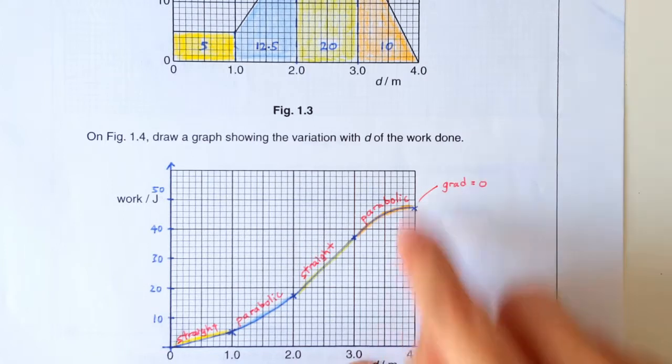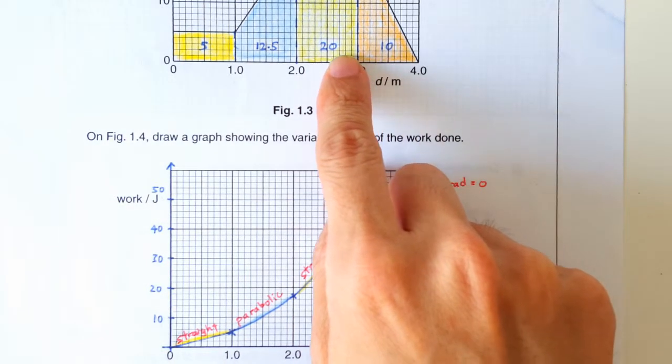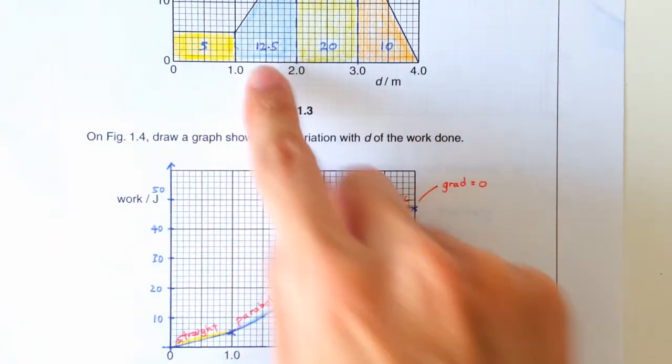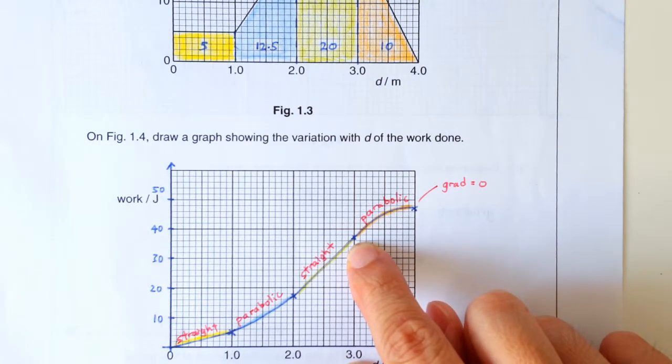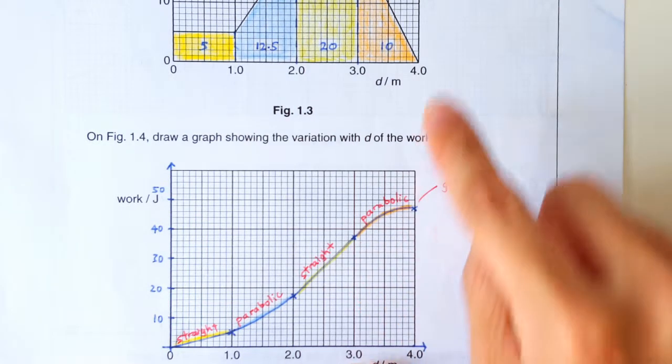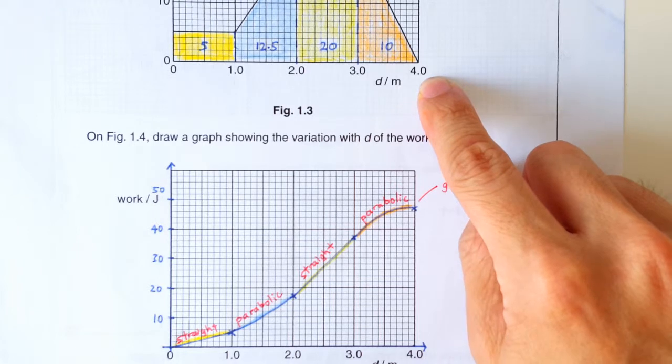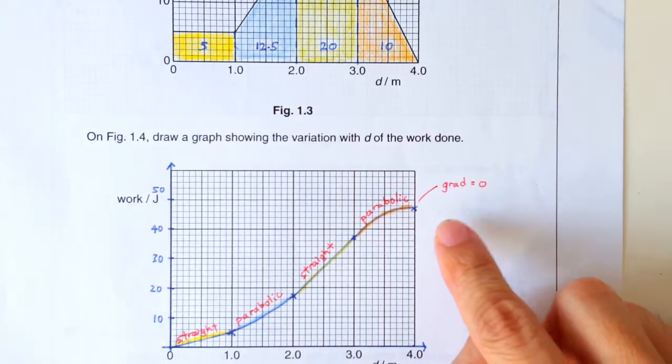So at 3 meters, the total work done would be 25 plus 12.5, that's 37.5. And lastly, at 4 meters, the total work done will be 47.5.